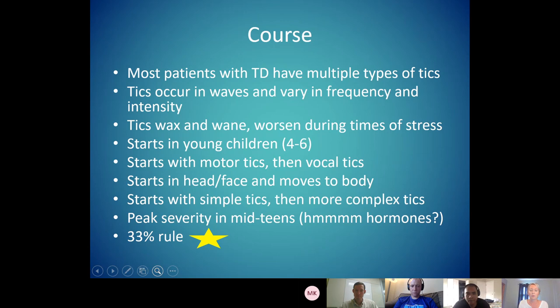When they look at tics and puberty, what they have found is that 33% of patients with Tourette syndrome have tics that decrease or dissipate after adolescence, 33% stay the same, and 33% actually get worse. Statistically, this incredible 33-33-33 split really captures that this is considered a chronic diagnosis.